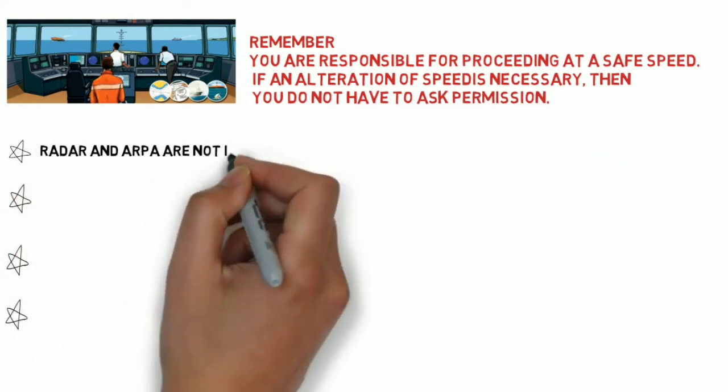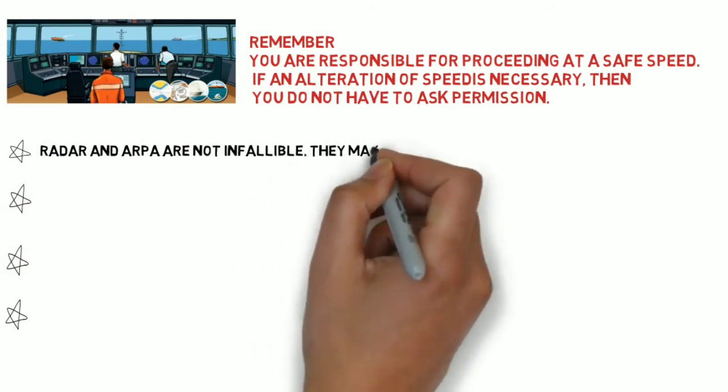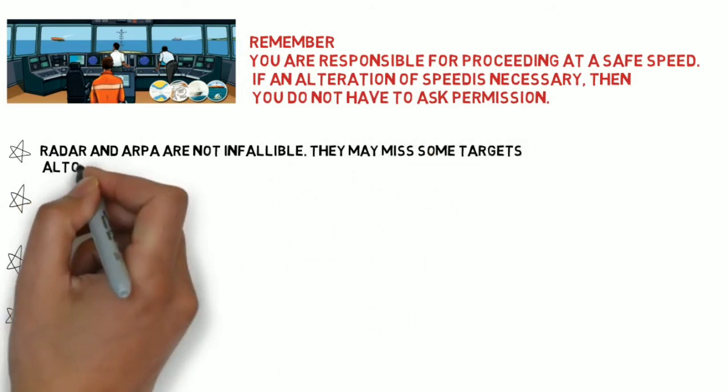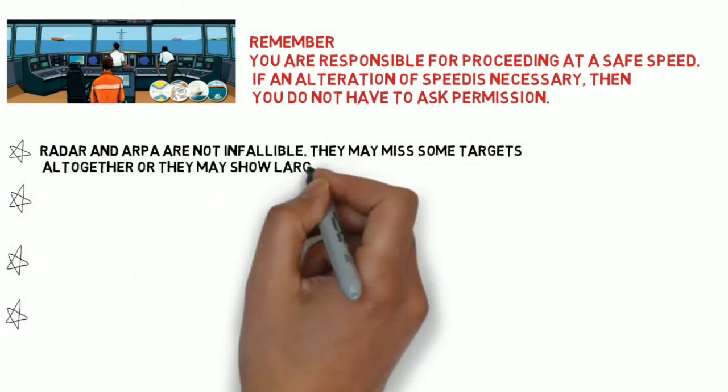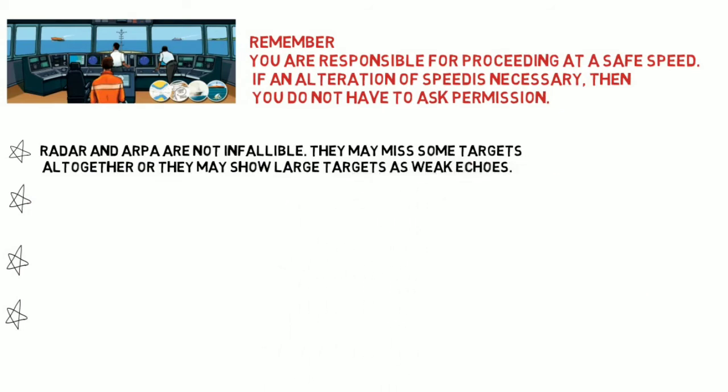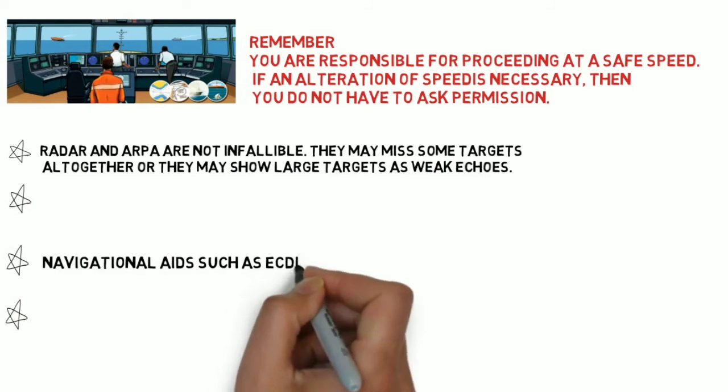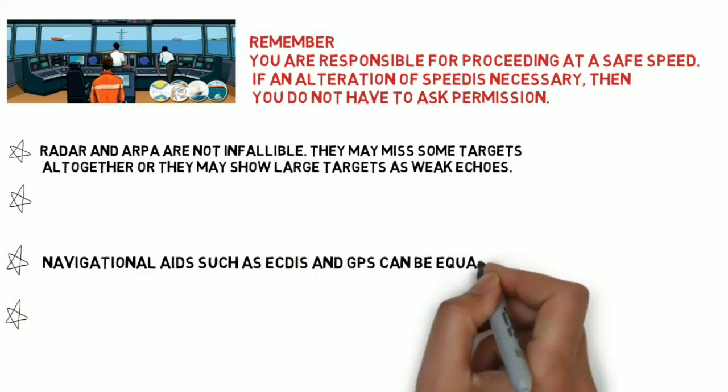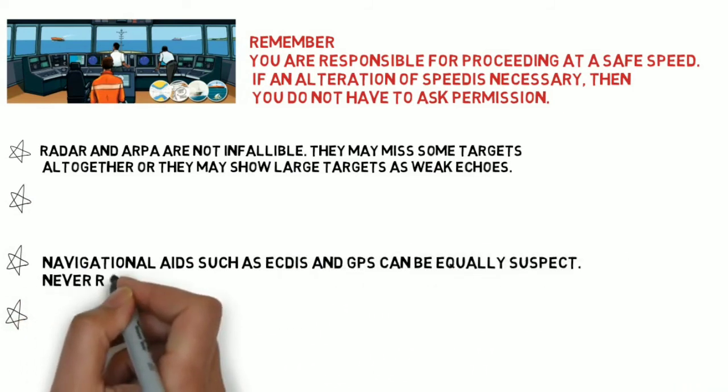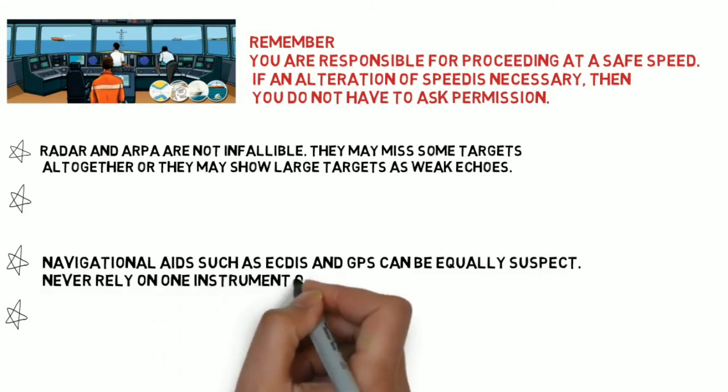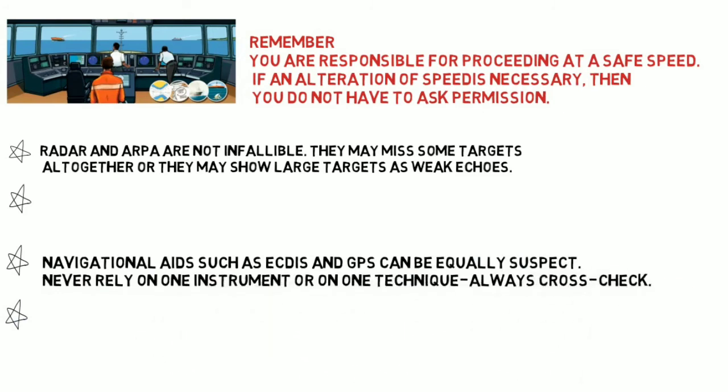The radar and ARPA are not infallible. They may miss some targets altogether, or they may show larger targets as weak echoes. Navigational aids such as ECDIS and GPS can be equally suspect. Never rely on one instrument or on one technique. Always cross-check.